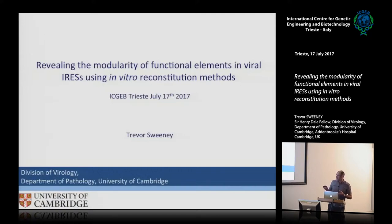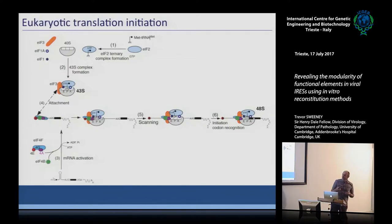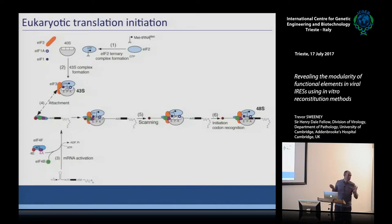I'll start with a brief overview of normal canonical translation initiation in the cell. The most controlling step of translation is at the initiation stage. The first thing that happens is the formation of the ternary complex — a complex of initiation factor EIF2 with initiator tRNA and GTP. This ternary complex is then recruited to the 40S small ribosomal subunit.